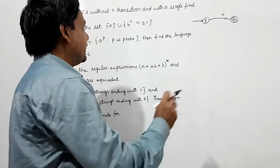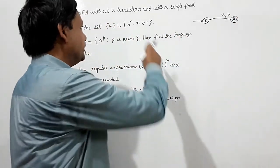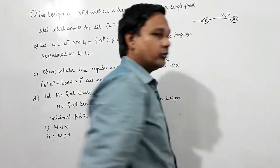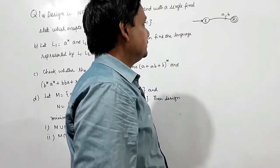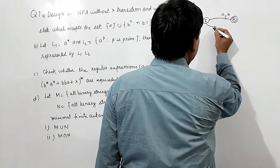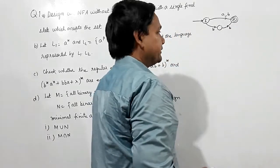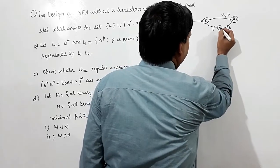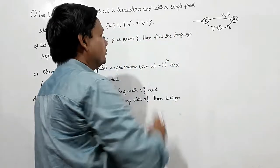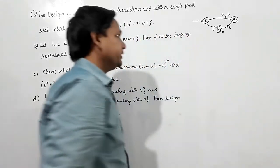For b to the n where n is greater than or equal to 1, if n is 1 then b should also be accepted. bb should also be accepted. I don't have to make more than one final state and there shouldn't be any lambda transition. For 2 b's, 3 b's, 4 b's, 5 b's — all accepted in this way.